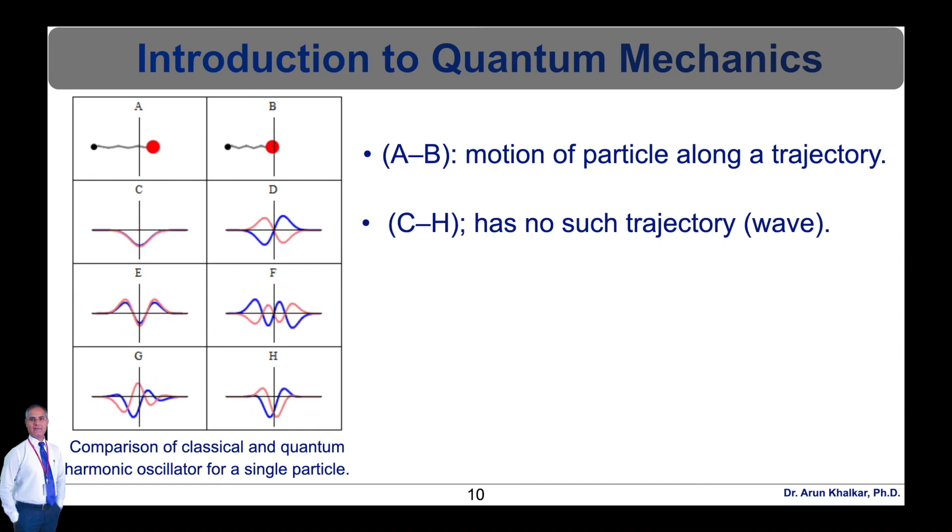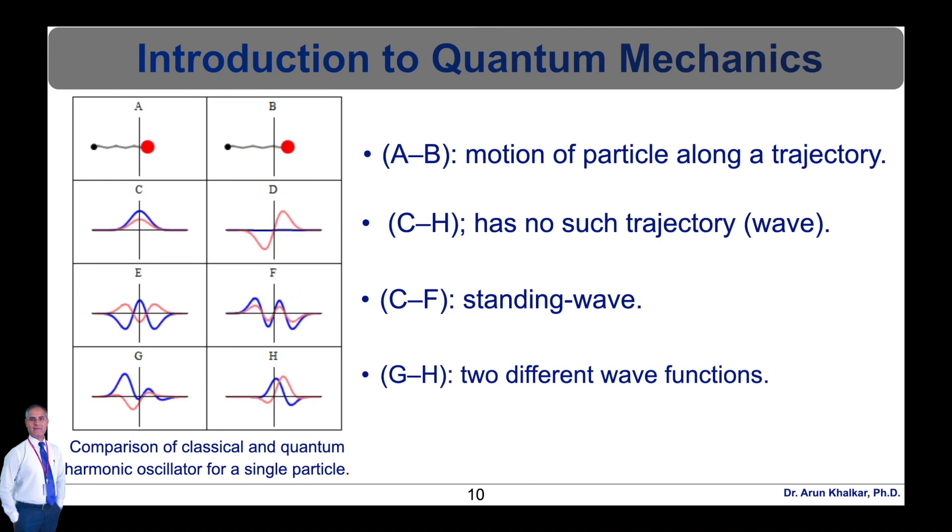Here the vertical axis shows the real part in blue and the imaginary part in red of the wave function. Panels C to F show four different standing wave solutions of the Schrodinger equation. Panels G to H further show two different wave functions that are solutions of the Schrodinger equation but not standing waves. This is the comparison of classical and quantum harmonic oscillator for a single particle.